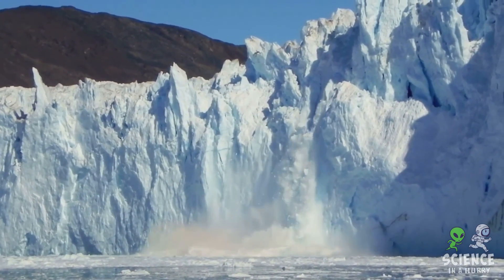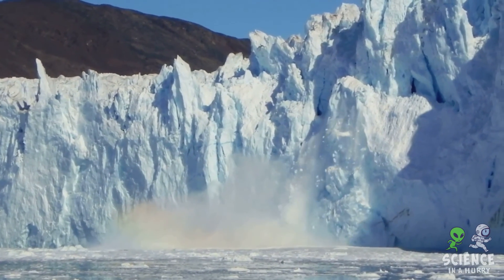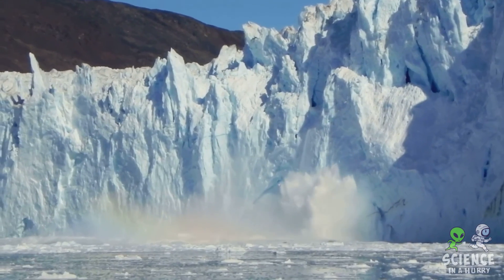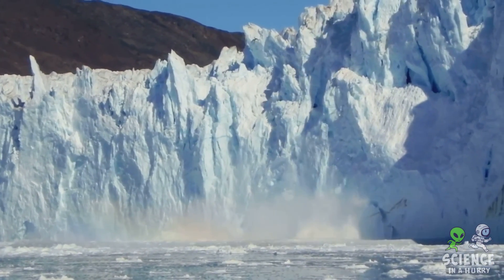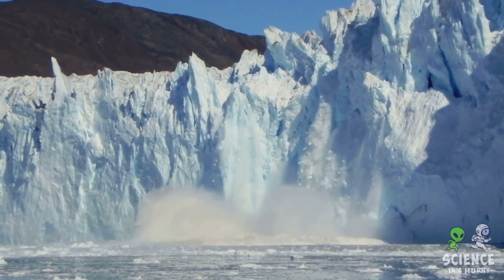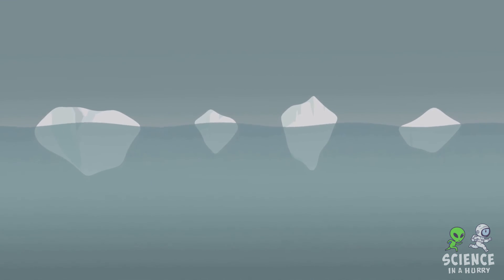Global warming is essentially an increase in Earth's average temperature. This, in turn, causes the polar ice caps to melt. As this ice, previously stored on land, melts and flows into the oceans, it causes sea levels to rise. But there's another element at play here: thermal expansion. You see, as water warms, it expands, so warmer oceans due to global warming mean more voluminous oceans, leading to a further rise in sea levels.